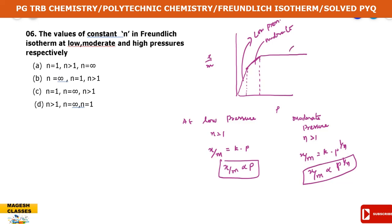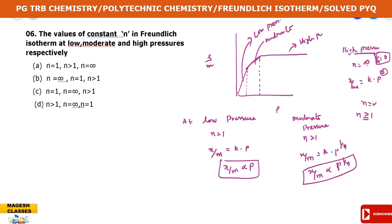At high pressure, adsorption is independent of pressure, so x by m equals k into p power 0. This means n equals infinity, and 1 by n equals 0. So at high pressure, n equals infinite value. The n value condition: n is equal to or greater than 1, and 1 by n is between 0 and 1 (greater than 0 and less than or equal to 1).